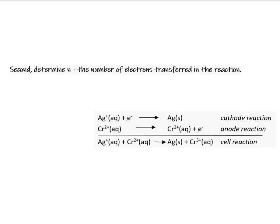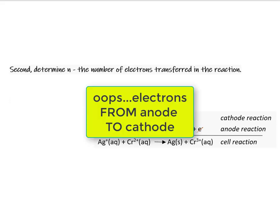The second step is to determine the number of electrons transferred in the redox reaction. Here we see there's a 1 to 1 electron transfer from the cathode reaction to the anode reaction.